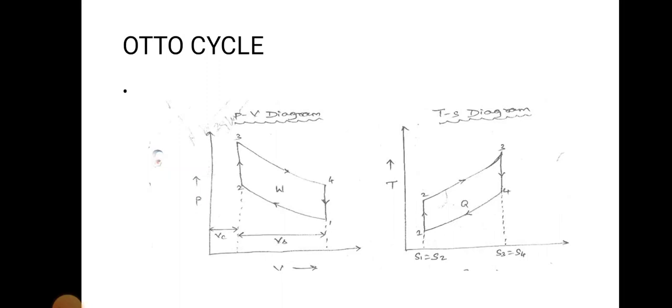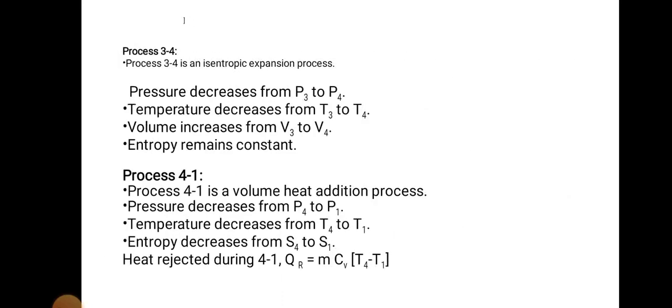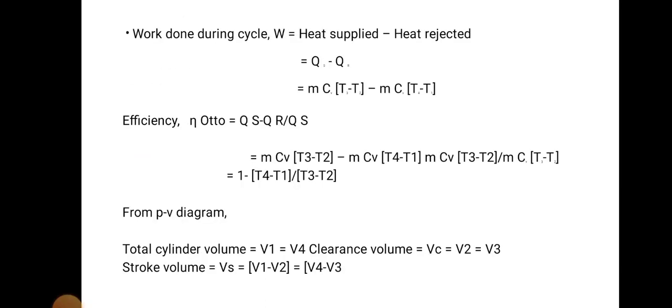Process 4 to 1 is a constant volume heat rejection process. Volume remains constant and pressure reduces from P4 to P1. Heat rejected Q_R equals m·C_V·(T4 − T1), where m is the mass and C_V is the specific heat at constant volume.